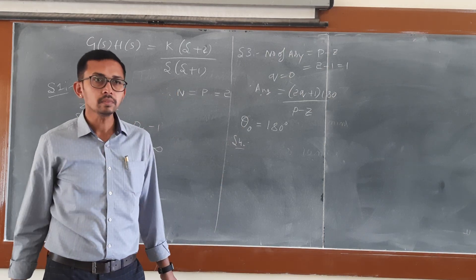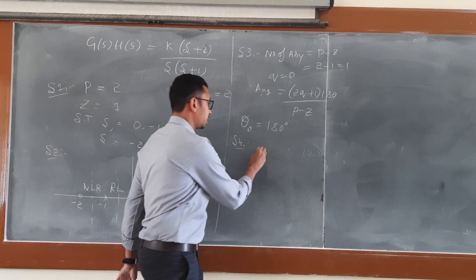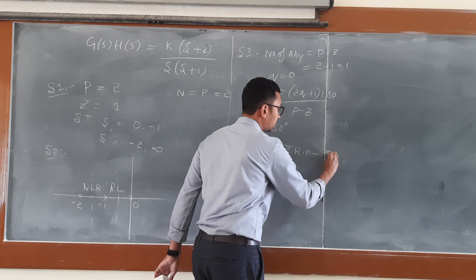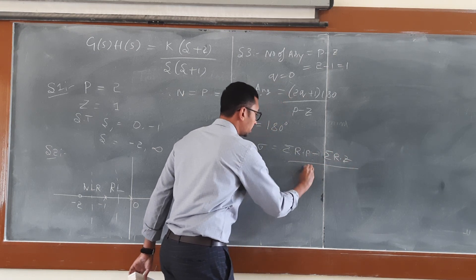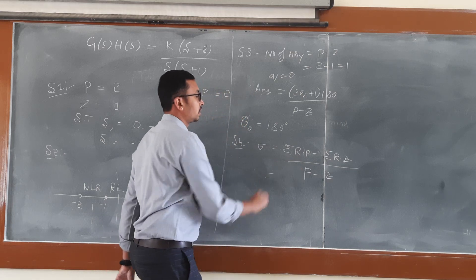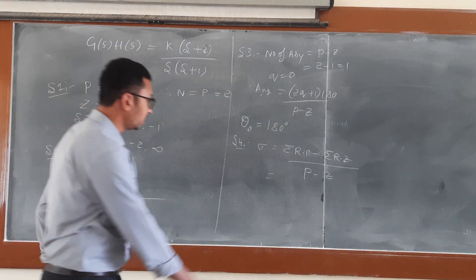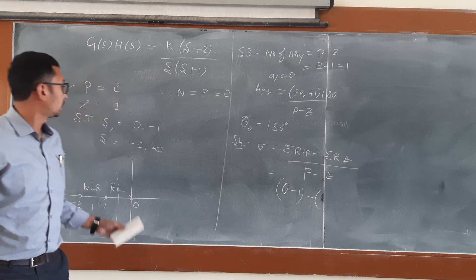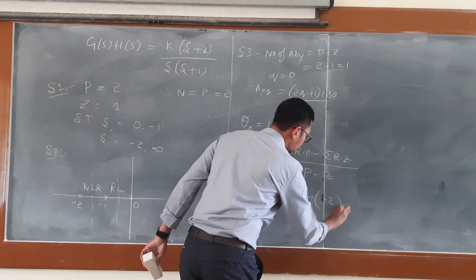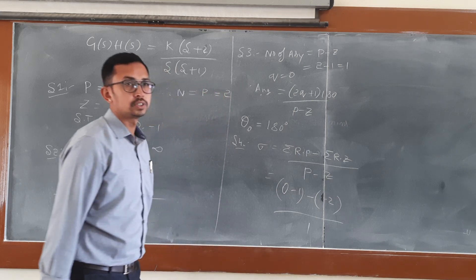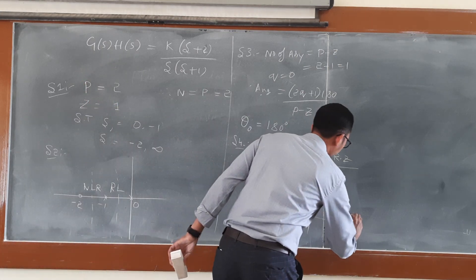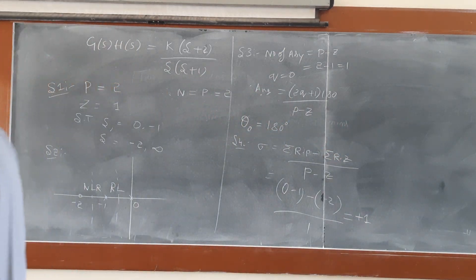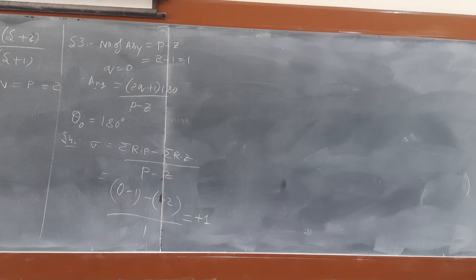Step number 4 (centroid): the centroid formula is summation of real parts of poles minus summation of real parts of zeros, divided by P minus Z. Summation of real parts of poles is 0 + (-1) = -1. Summation of real parts of zeros is -2. So centroid = (-1 - (-2)) / 1 = +1.